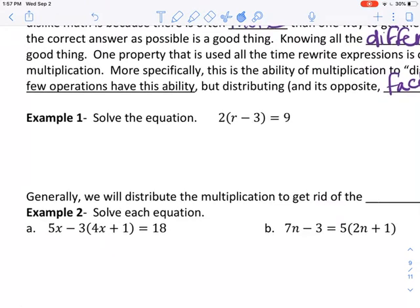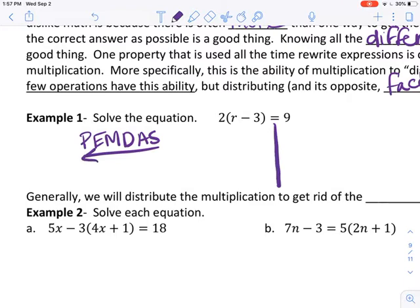We're going to solve this equation 2(r-3)=9 two ways. The first is one that you technically already know - you solve using PEMDAS but backwards, undoing everything. With parentheses, rather than doing what's inside first, we do what's inside very last. So the first thing we get rid of is this 2. That 2 is multiplying, so we're going to divide by 2 on both sides.